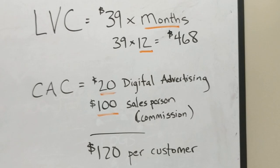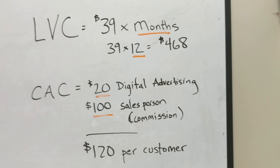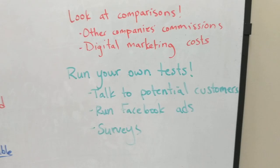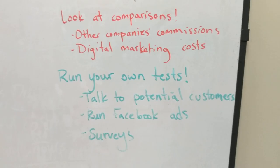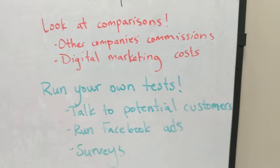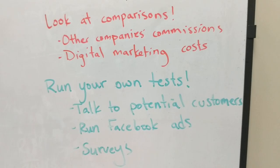The calculations here are not hard — what's hard are the assumptions underneath. So where can you come up with the numbers for your assumptions? You can look at comparisons: look at other companies. What are other companies charging in terms of commission? What's the cost of acquiring a customer using Facebook or search engine optimization? There are lots of blog posts out there, and lots of comparable costs you can find for similar companies or similar industries.